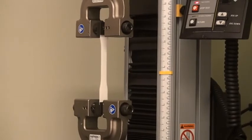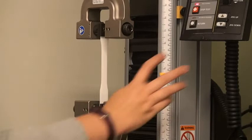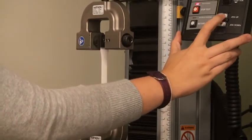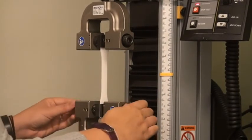Use the keypad to jog the actuator down until your sample is in the desired position in the lower grip. Tighten the screw knobs to grip your sample.